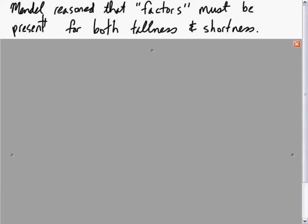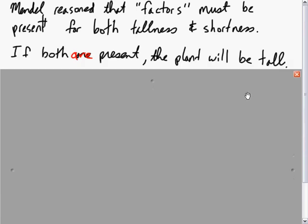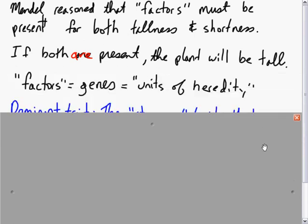What came out of this? Gregor Mendel reasoned that factors must be present for both tallness and shortness in pea plants. If both are present, tall and short, then the plant will be tall. This could explain how it could skip a generation.